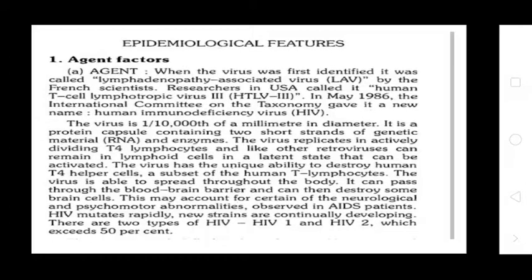Epidemiological features of AIDS — Agent Factors: When the virus was first identified, it was called lymphadenopathy-associated virus by French scientists, and human T-cell lymphotropic virus by researchers in the USA. In May 1986, the International Committee on the Taxonomy of Viruses gave it a new name: Human Immunodeficiency Virus (HIV).